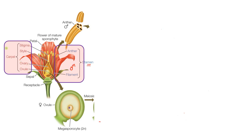The female part comprises a stigma, which receives the pollen grain, then there is a style, and then there is an ovary. Inside the ovary there is an ovule. Together, the stigma, style, ovary, and ovule are called the carpel, which is the female part of the flower.